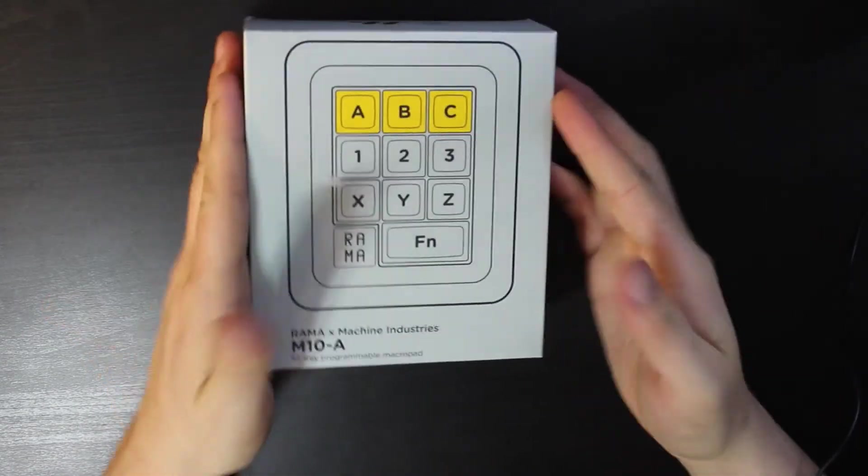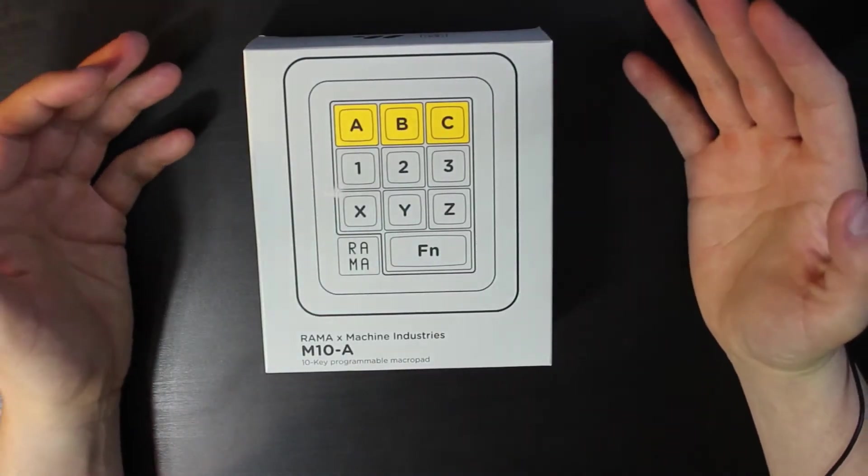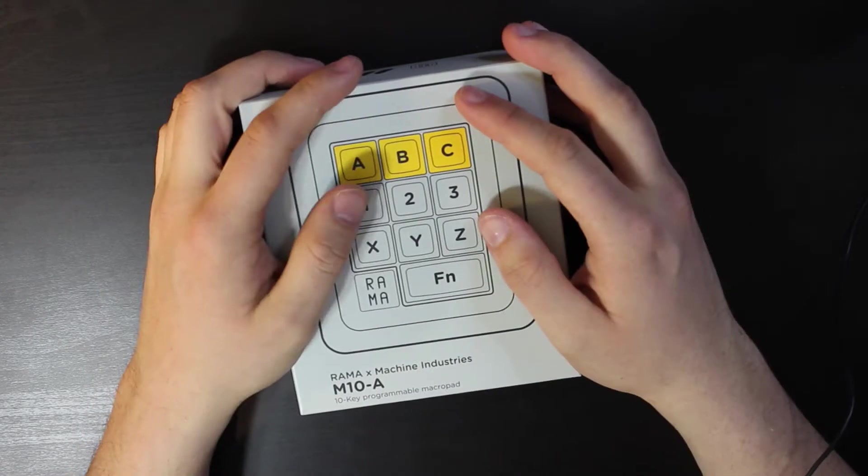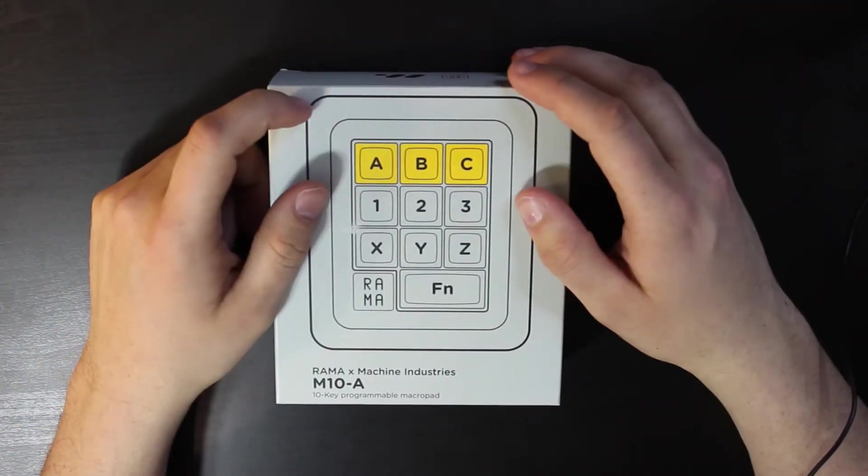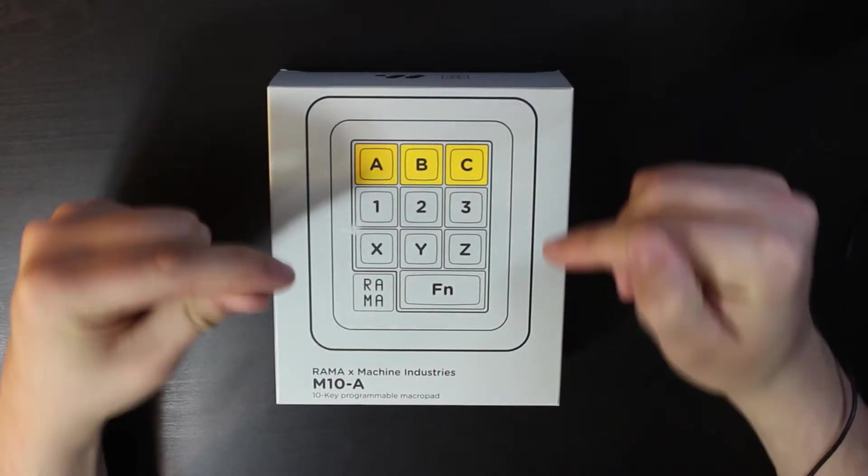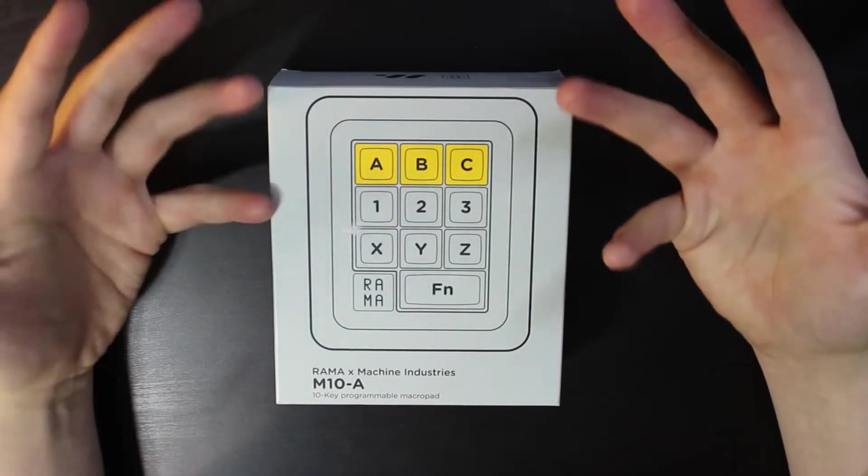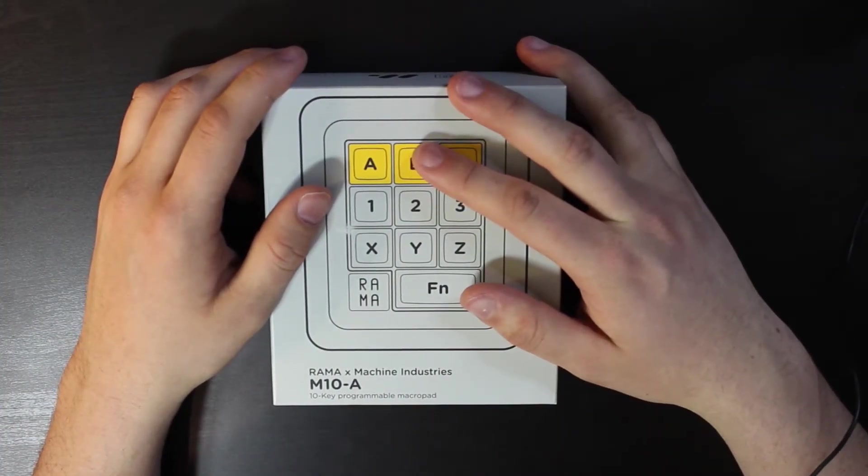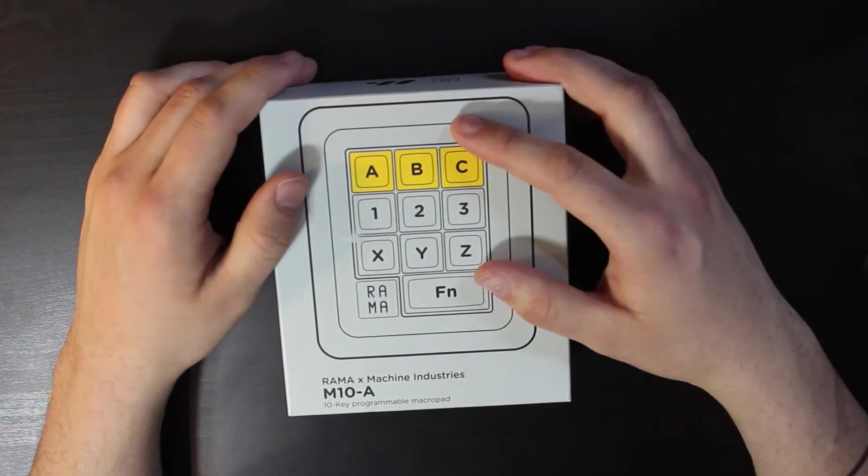Basically what this is, is a keypad that you can pretty much bind any key command or function or whatever you want to do to the small keypad. We're just going to do a brief unboxing today and we'll see what is in this box, how it works with your computer. Today we're going to try with Windows 10 and from there on we'll just play around with it. Let's get to it.